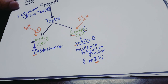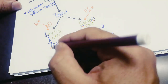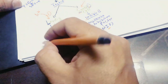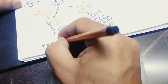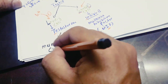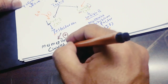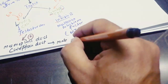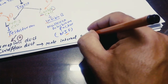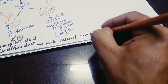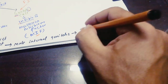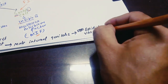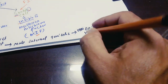Testosterone stimulates the differentiation of the mesonephric duct, also called the Wolffian duct, into male internal genitalia. The Wolffian duct converts into the male internal genitalia, which consists of the epididymis, vas deferens, and seminal vesicle.